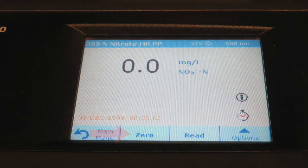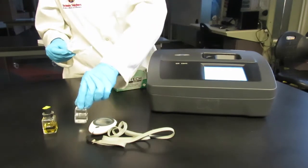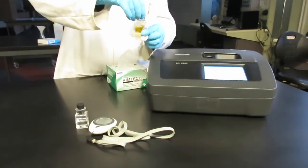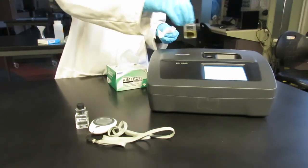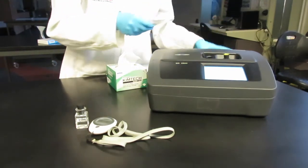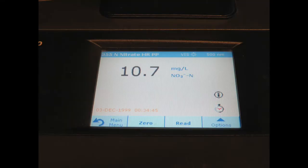Take the blank cuvette out and use a kimwipe to wipe your sample cuvette. You will need to do this within 15 minutes otherwise over-processing will occur and you will not have accurate results. Insert the sample cuvette into the cell holder. Cover with the light shield and hit read.